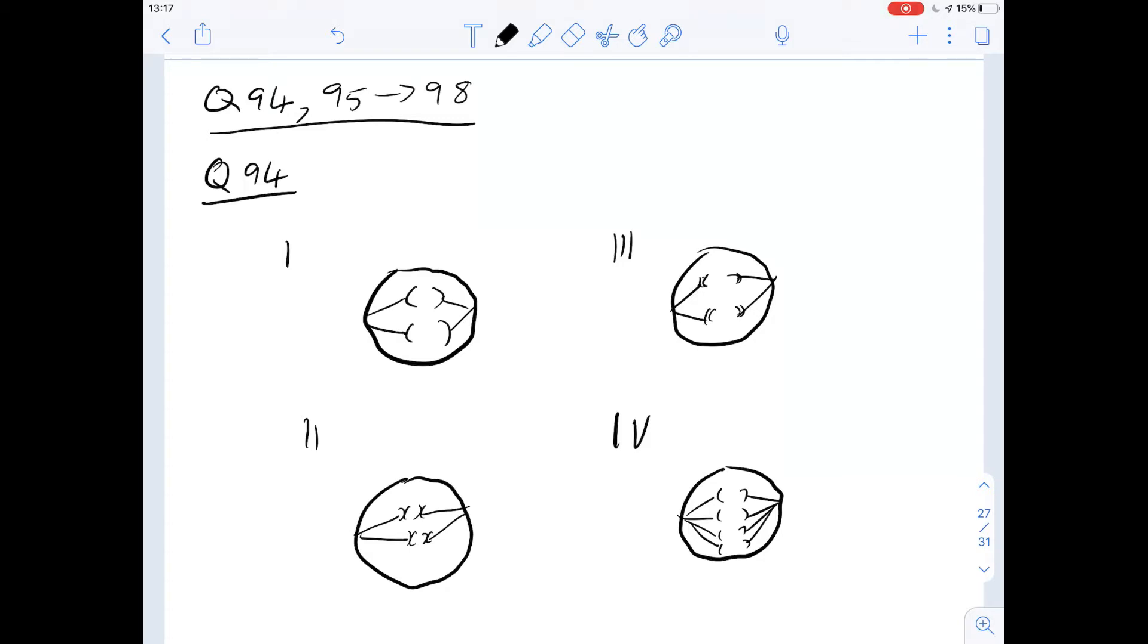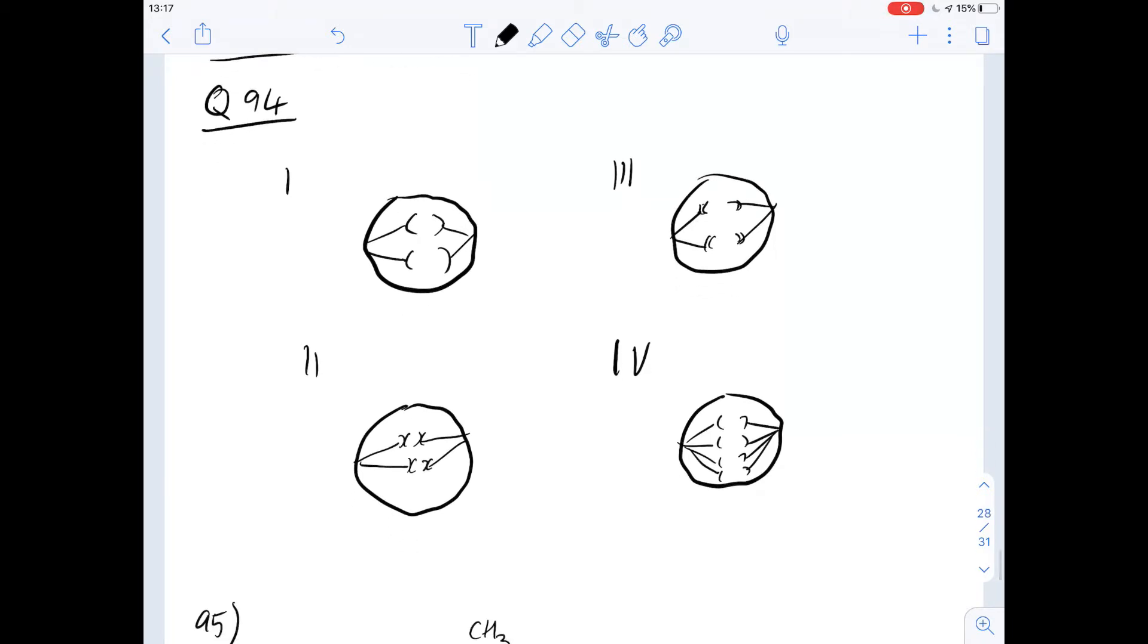This one says which one of the following represents the anaphase stage in the meiotic division of diploid cells. It basically contains four chromosomes. So we've got four diagrams here, and we've been told that it's a meiotic division. From these diagrams, you should be able to tell what stage of division this is.